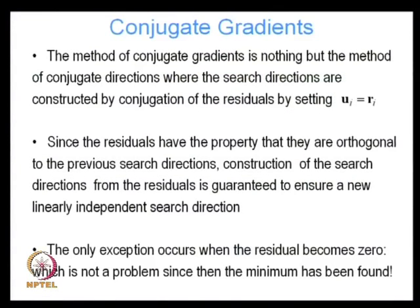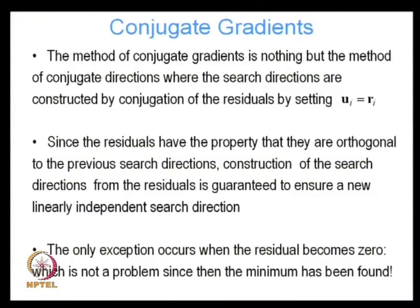Why do we choose residuals? The advantage is that residuals have the property that they are orthogonal to the previous search directions. We obtained at the end of the last lecture that each residual at iteration step i is orthogonal to all the previous search directions 0, 1, 2, up to i−1. Since the residuals are orthogonal to all previous search directions, constructing the new search direction from the residual guarantees it is a new linearly independent search direction.